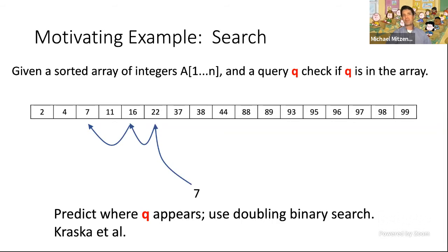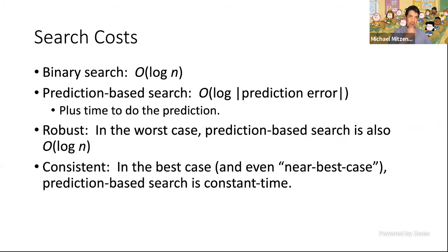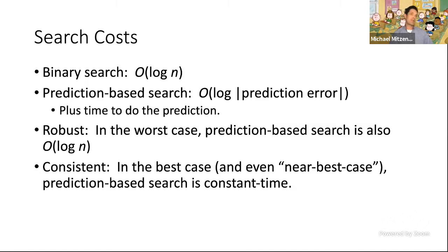The idea is to use a prediction to help start the search. Binary search is O(log n). This prediction-based search is O(log(prediction error)) — and I'm not counting the time to do the prediction itself, just the search steps. We'll use the term 'robust' to say it still behaves nicely in the worst case: the search is also O(log n), losing at most a constant factor of two. We call it 'consistent' if in the best case it's constant time.